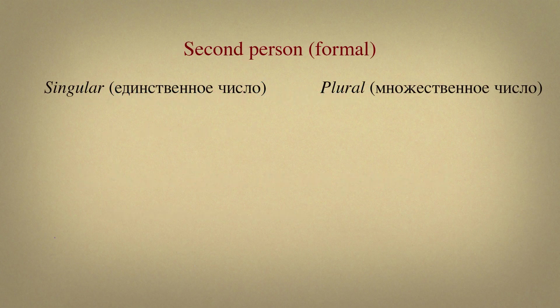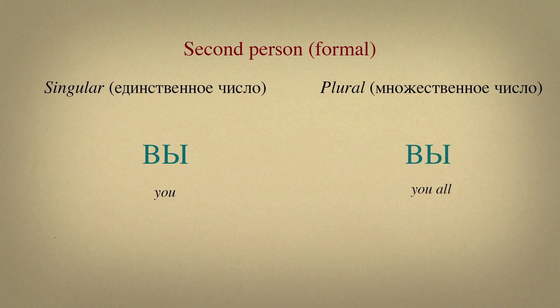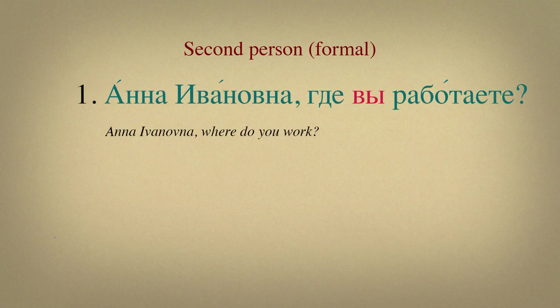Let's move on to pronouns of second person in a formal situation. Here, we have единственное and множественное число as for all pronouns. In единственное число, if you are talking to one person, we use вы. And in множественное число, when you are talking to more than one person, the pronoun is the same — вы. Here are examples of how you can use these pronouns. Анна Ивановна, где вы работаете?